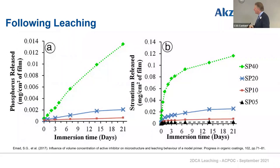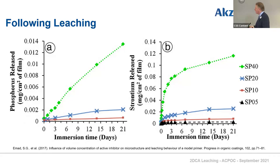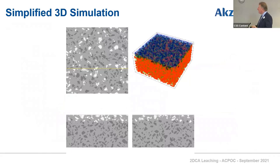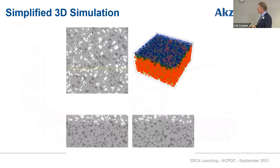If all the material leaked out very quickly and there was nothing left — as shown in the first part of the curve — you'd have no further corrosion protection. Equally, if you've got enough material it may leach very slowly, but there may not be a critical level sufficient to stop corrosion. We've simulated this properly in a 3D sense.